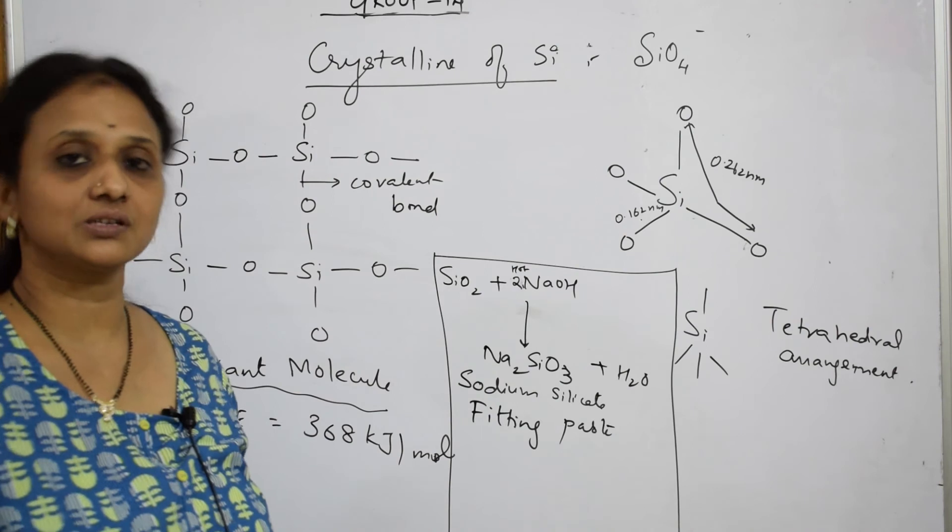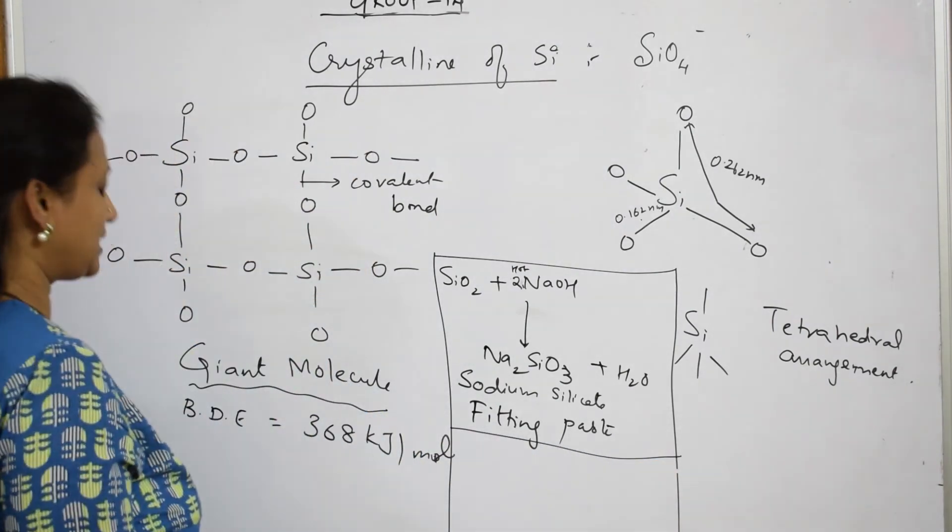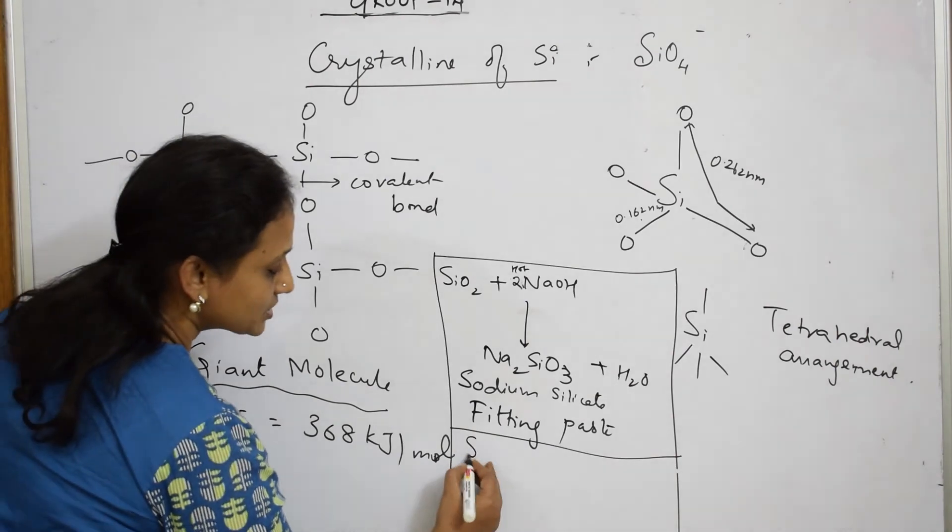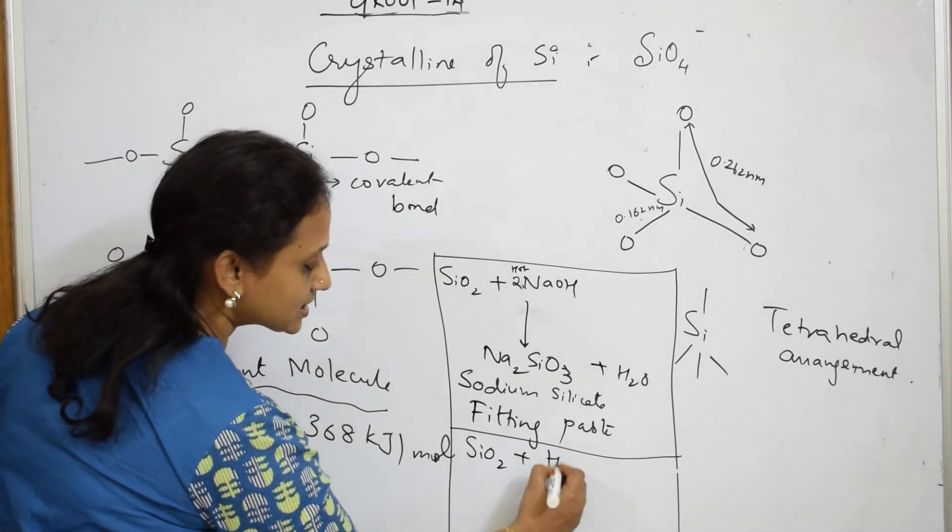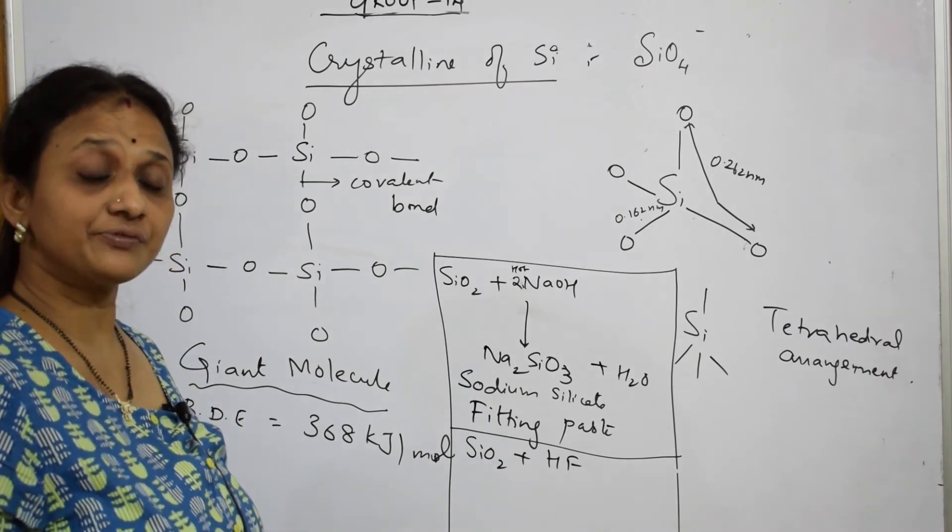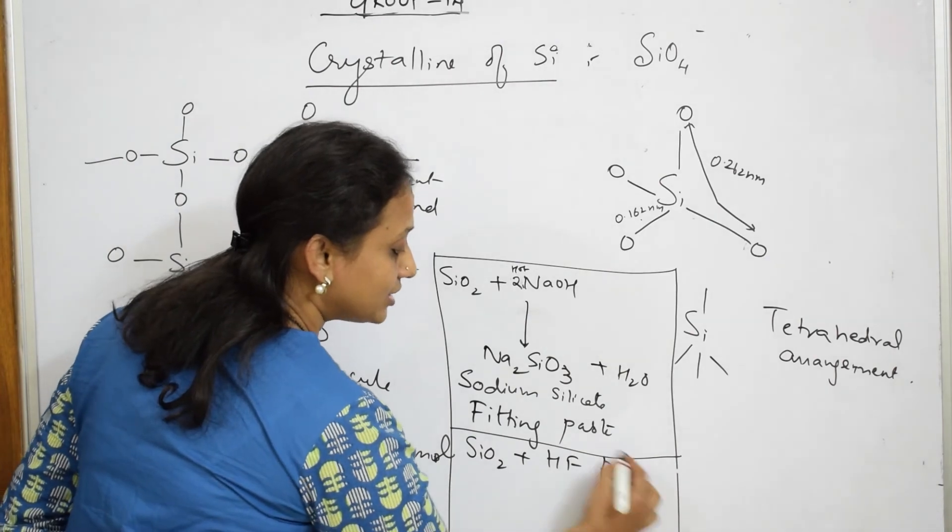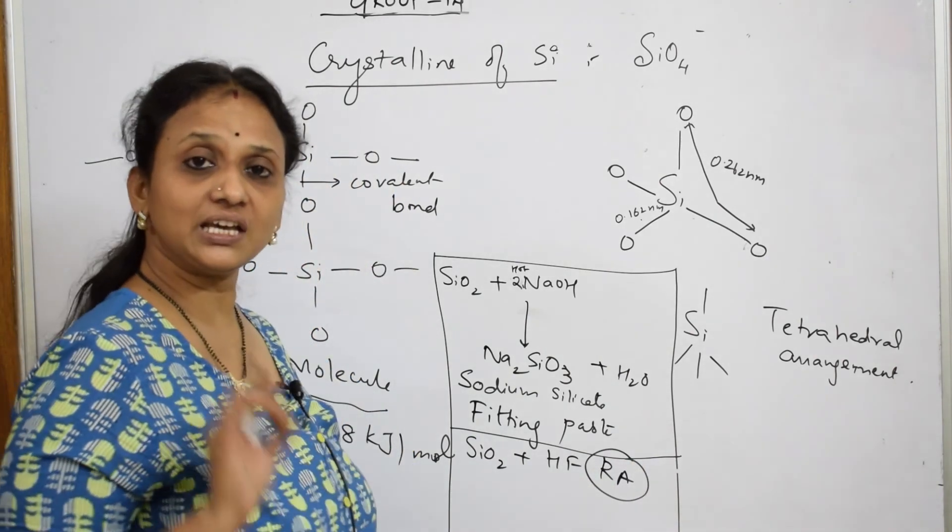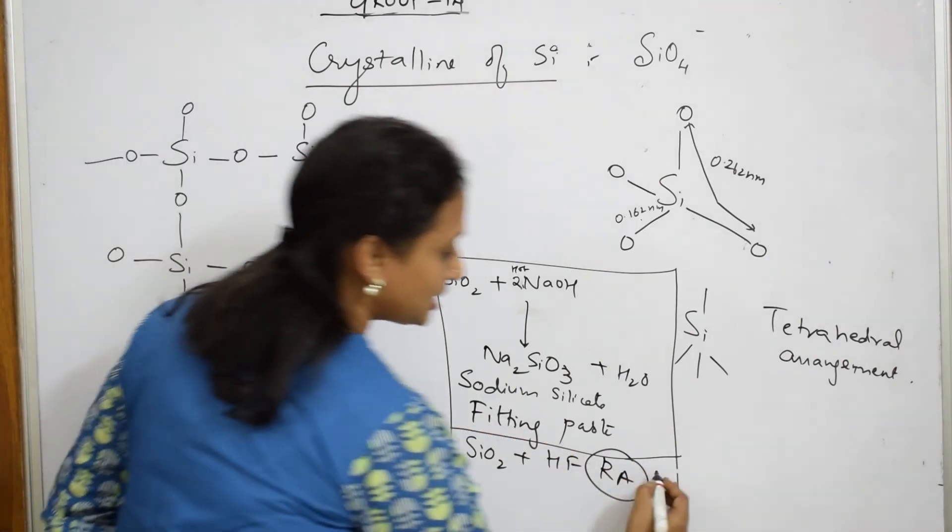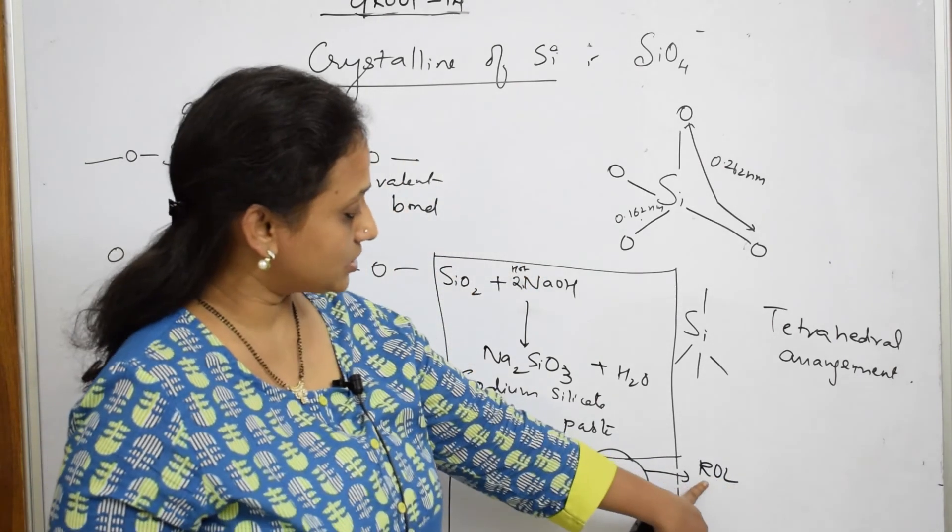Now next important thing, I'm going to write one more reaction. Just observe. Silicon dioxide when it is combined with HF, what is HF? Hydrofluoric acid. HF is a strong reducing agent. Remember I'm writing it as reducing agent. ROA means reducing agent.